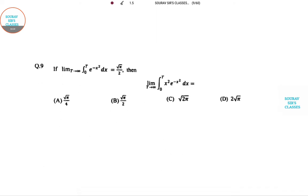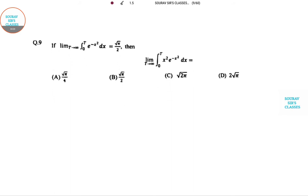Question number 9 is on the basis of an integration. Limit T tends to infinity, 0 to T, e to the power minus x squared is 5 by 2, so then they have asked for a different value. They have newly introduced e of x squared. If I start with this, this part will be minus half outside. Limit T tends to infinity, 0 to T, x minus 2x e to the power minus x squared dx.